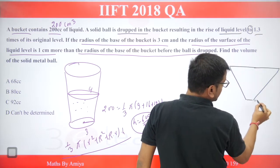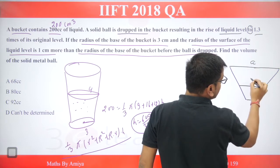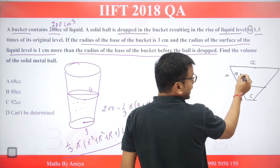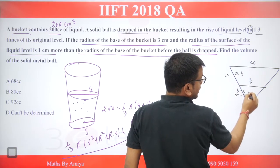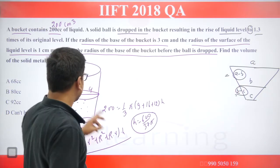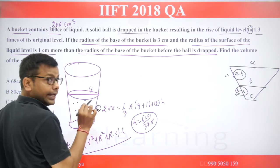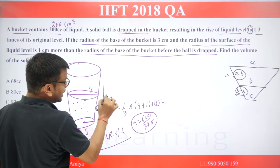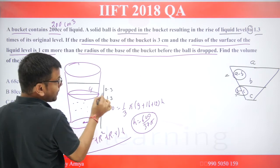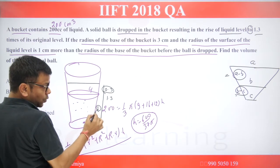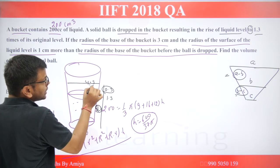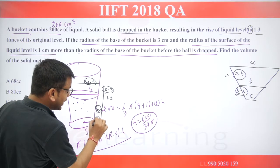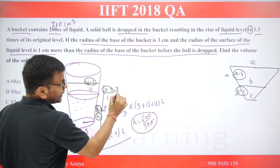In ratio terms — if this one is a, this one is b, this one is c — then the ratio of the parts is (a minus b) to (b minus c). Both gaps: if one gap is 1, the other gap is 0.3. So the radius at the raised water level is 4.3. If I call this height h, then the raised portion height is (3/10)h.